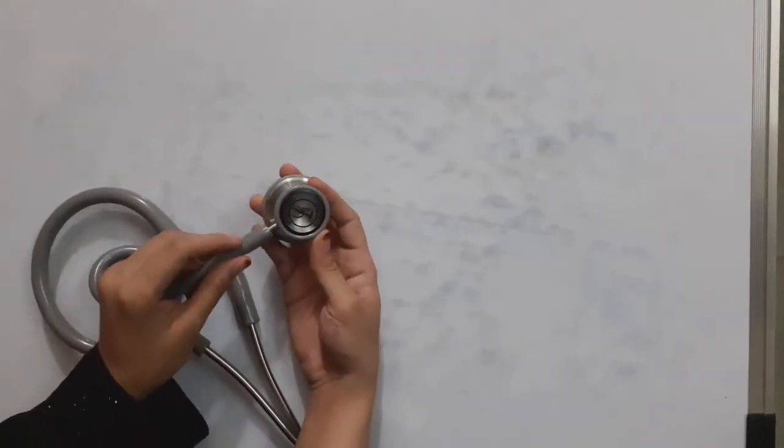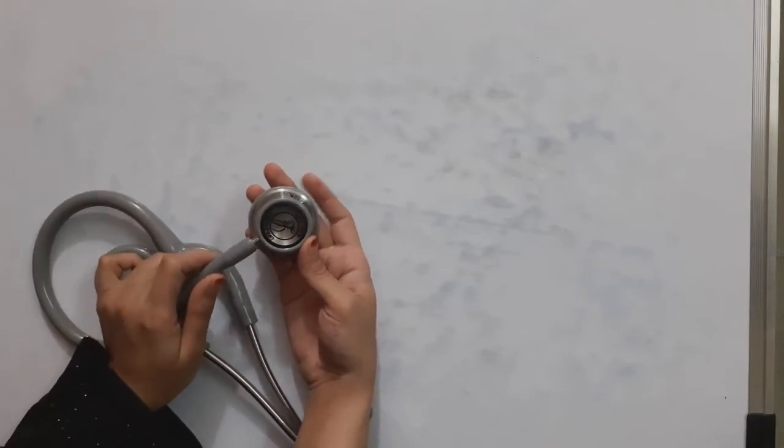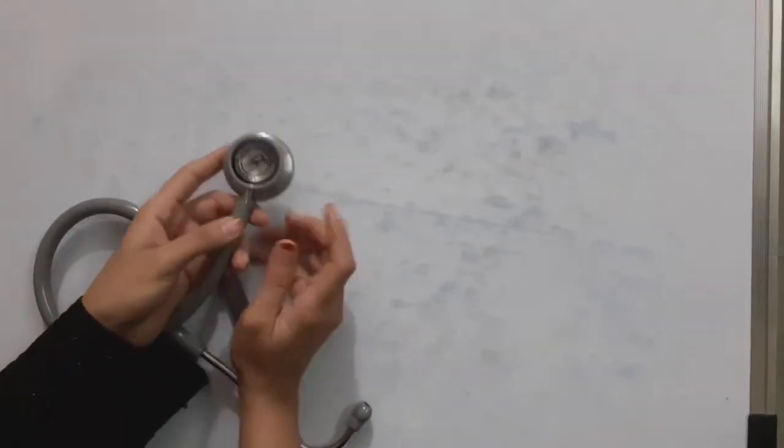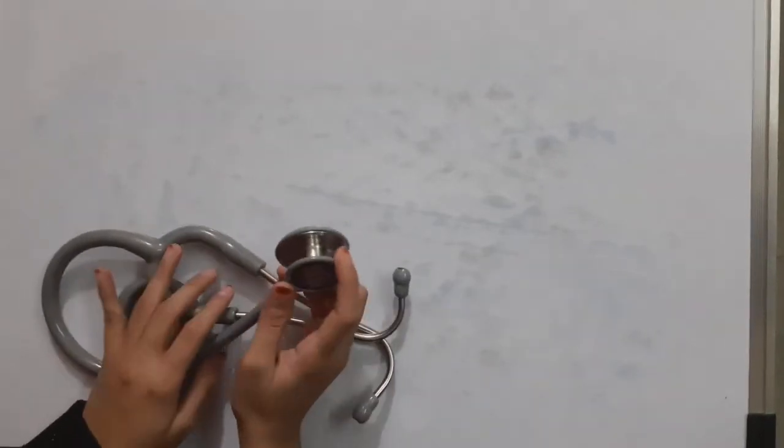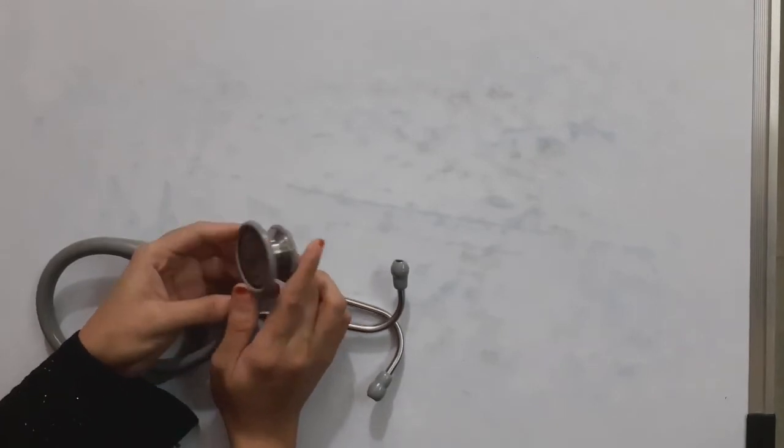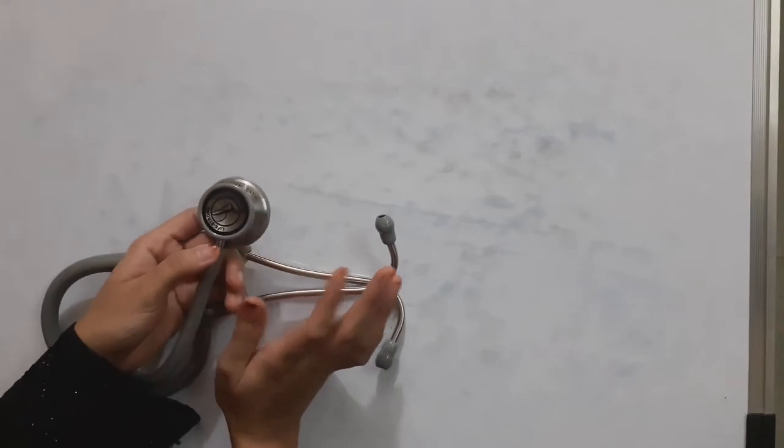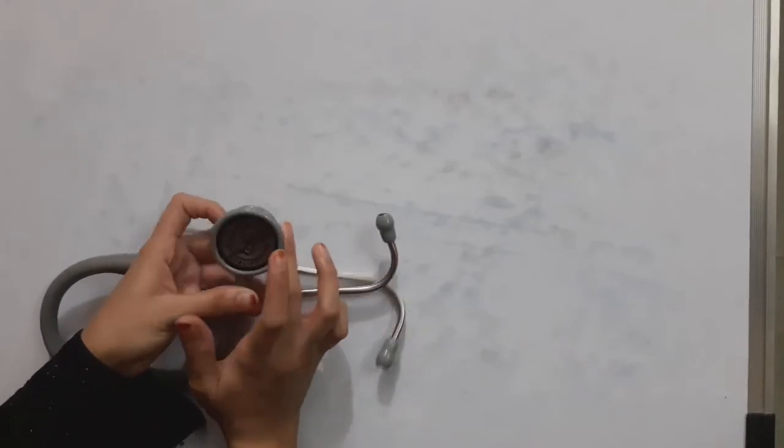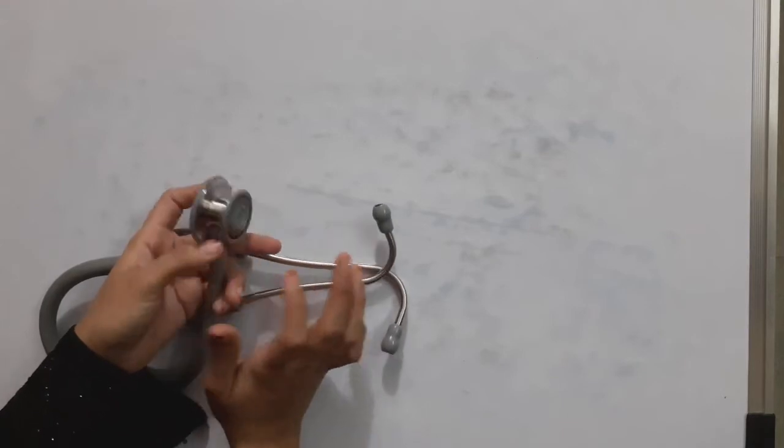The part connecting the chest piece to the rubber tubing is called the stem. The bell transmits low frequency sounds, and the diaphragm transmits high frequency sounds. For heart or lung sounds, we use the diaphragm.